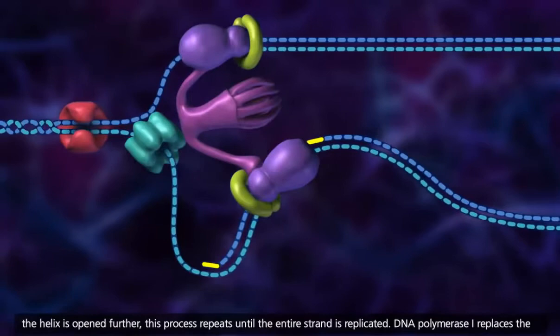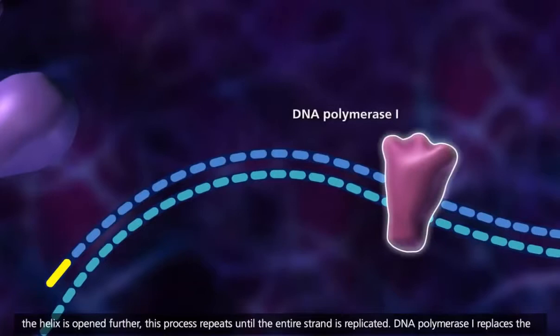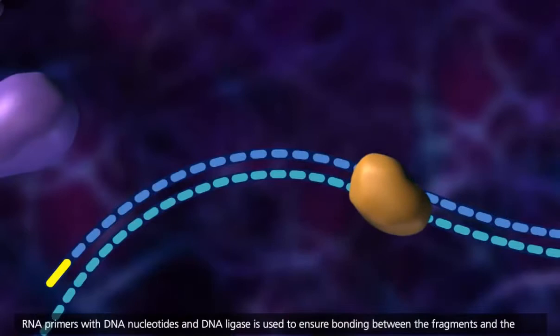DNA polymerase 1 replaces the RNA primers with DNA nucleotides, and DNA ligase is used to ensure bonding between the fragments and the replaced nucleotides.